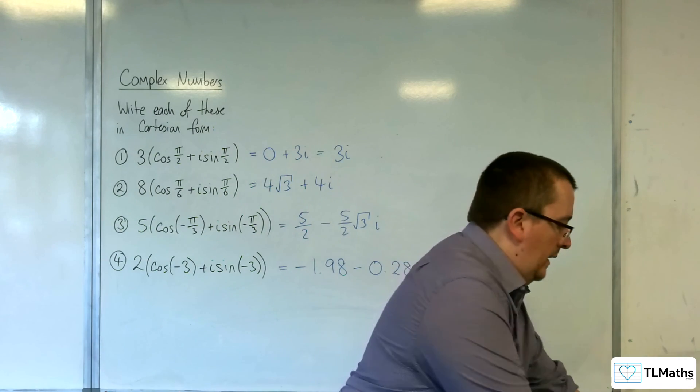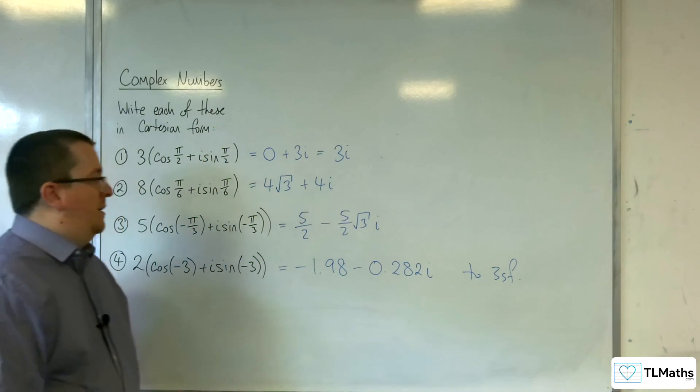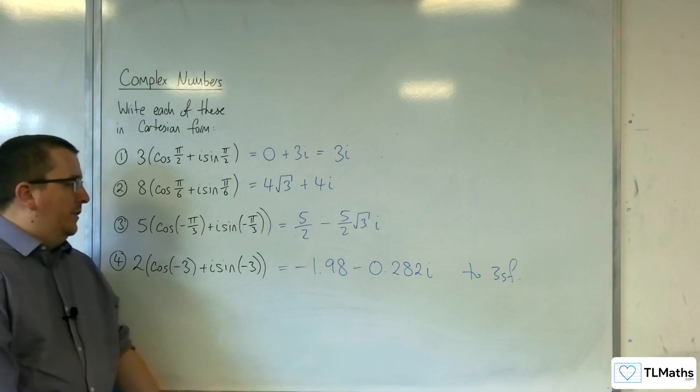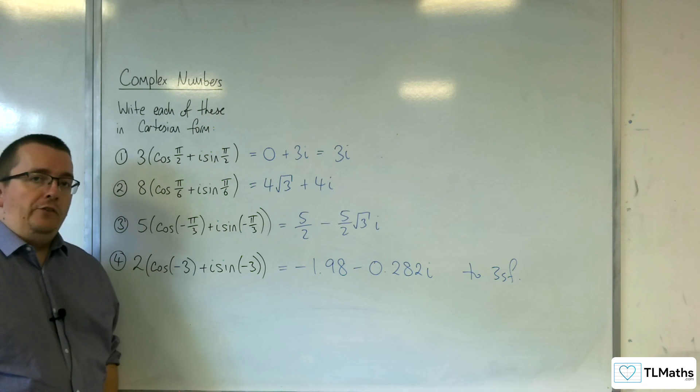So all you're doing is you can write it straight into your calculator, multiply it out, and then you've got it in Cartesian form as required.